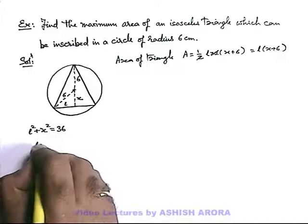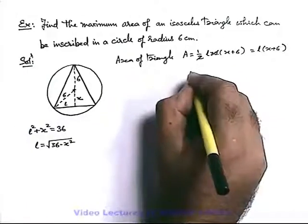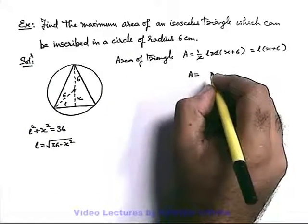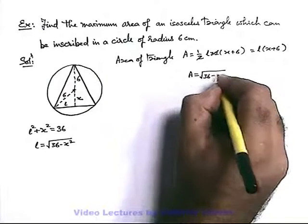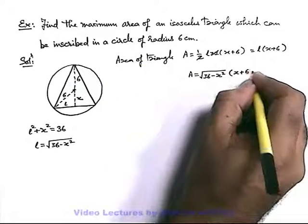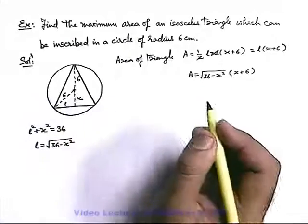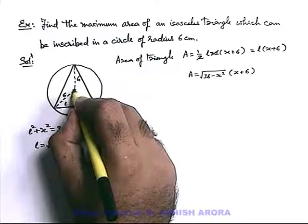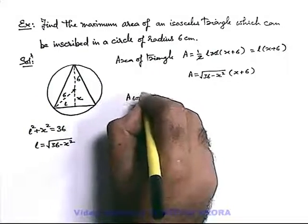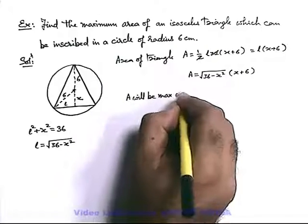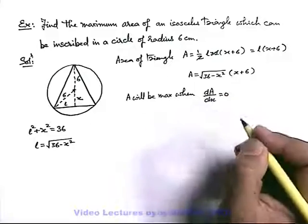From l² plus x² equals 36, we get l equals root of (36 minus x²). Substituting into the area expression, the area A equals root(36 minus x²) times (x plus 6). Now area is expressed in terms of a single variable x, representing the height of the center above the base of the triangle. A will be maximum when dA over dx is equal to zero.